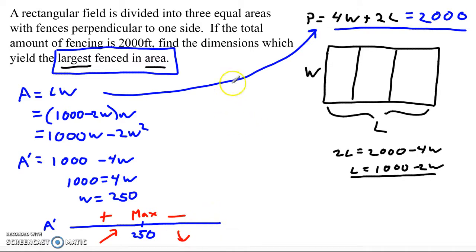So now we know that with a width of 250, we get the max area. The question was asking for the dimensions of the problem. Well, W is only one number. It's not the dimensions.